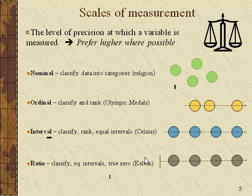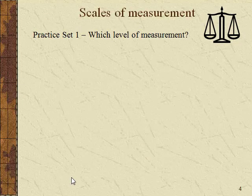More common ratio-level measurements include time, distance, speed, and weight — all physical-world measures with true zeros. Think about a baby's weight at birth: if a baby weighs 8 pounds, it's ratio because you start at zero and move up. The second way you know it's ratio is if you can set up a ratio — a baby that weighs 16 ounces weighs twice as much as one that weighs 8 ounces. Similarly, 20 miles to Charlotte is twice as far as a town 10 miles away, or 4 hours is twice as long as 2 hours.